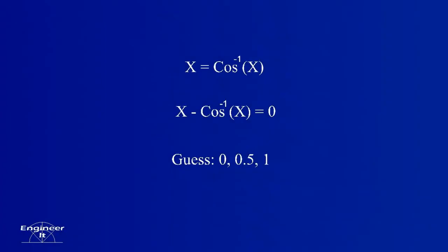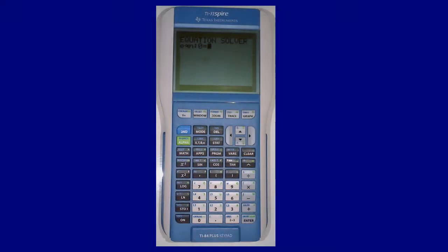The next example will be a rearranged version of the previous equation. Now it will be x equals arc cosine x. Make sure the equation is solved for zero. Return to the solver screen and plug it into the solver.